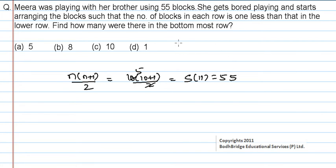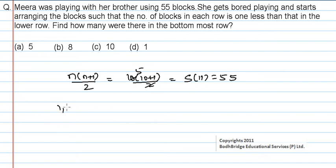As per the given data, she is arranging blocks such that the number of blocks in each row is 1 less than that in the lower row. So she is going to arrange them as 1, 2, 3, 4, 5, 6, 7, 8, 9, 10 — starting from the top row going down.